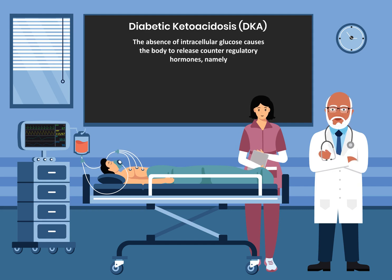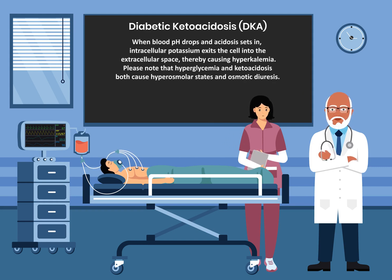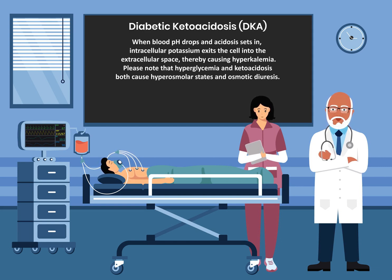The absence of intracellular glucose causes the body to release counter-regulatory hormones, namely glucagon, catecholamins, cortisol, and growth hormone. These regulatory hormones further increase serum glucose levels, and they all work against insulin. When blood pH drops and acidosis sets in, intracellular potassium exits the cell into the extracellular space, thereby causing hyperkalemia.